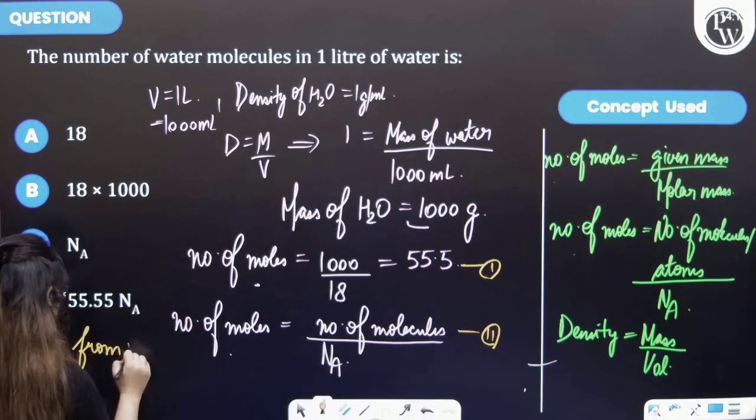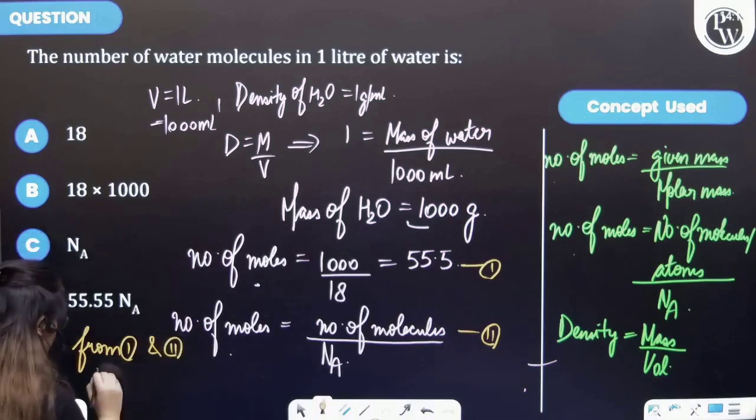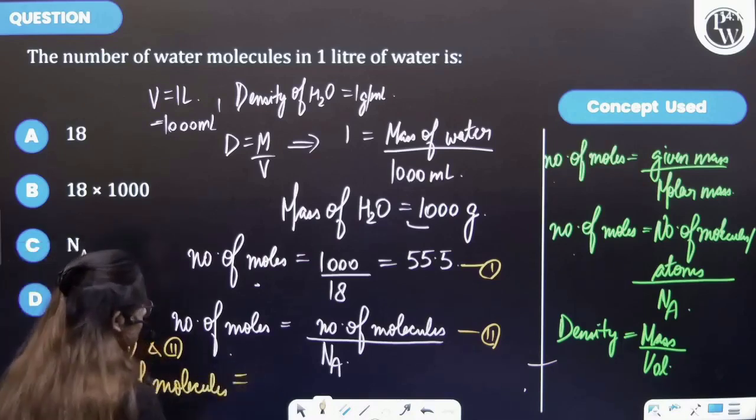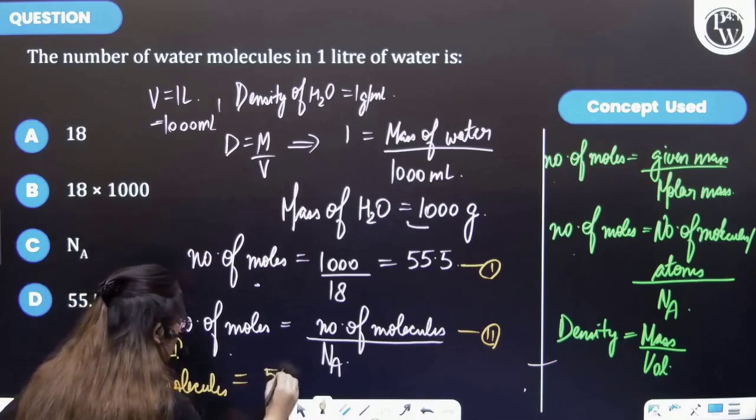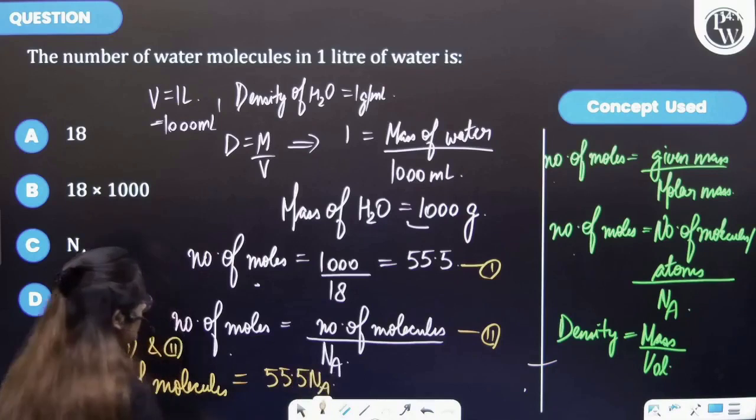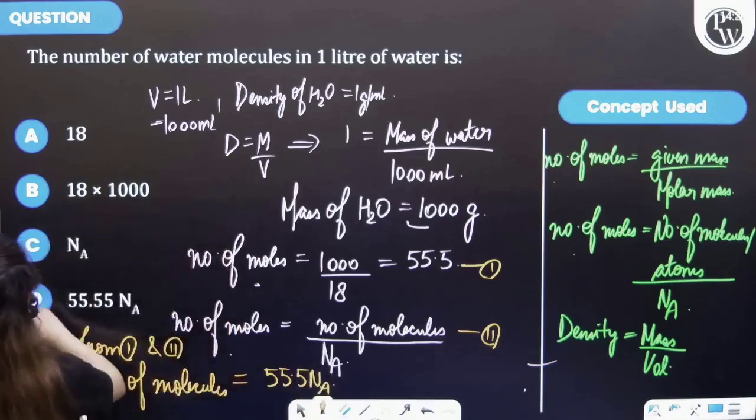Number of molecules of water will be 55.55 Na. That means option D is your correct answer.